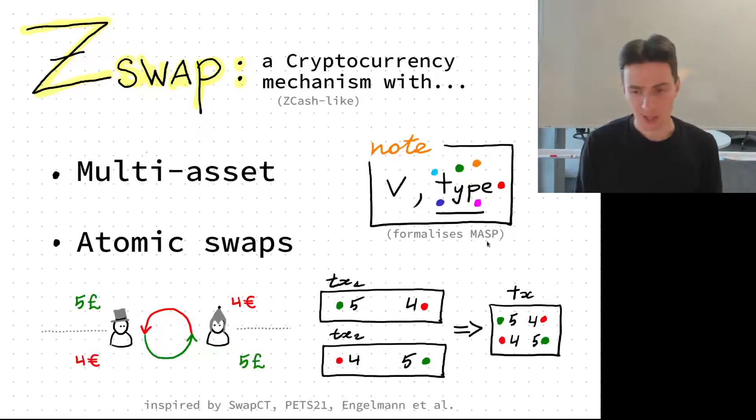This formalizes MASP and atomic swaps means that whenever two parties have some coins, this person on the left has five pounds, the person on the right has four euro, they can swap that atomically. We realize this swap by essentially allowing merging transactions together non-interactively.